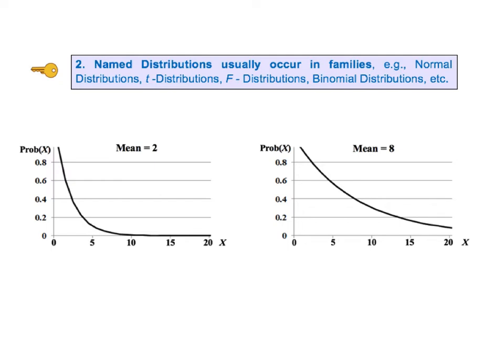Here we show two members of the exponential family of distributions. You can see how the shape as well as the probabilities vary with the values of the mean. The mean is the parameter which defines an individual distribution within the exponential family of distributions. Other distributions, like the normal and the chi-squared distributions, are defined by two parameters.